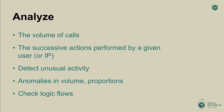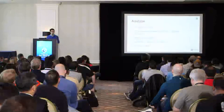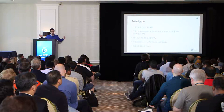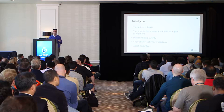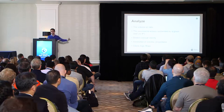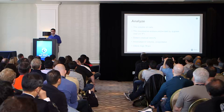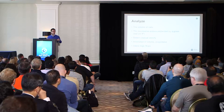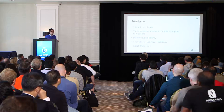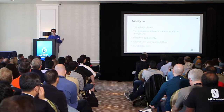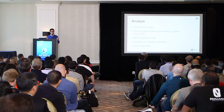Based on this event stream now filled with data, what analysis can we do? We could look at the volume of calls to a given helper, successive actions performed by a given user, IP, browser, or organization. We could detect unusual activity by running machine learning algorithms — forest trees or whatever — on the streaming engine. We can find anomalies in volume, proportions, per IP, per user, per application, per organization, per group. We could also check logic flows: are IPs generally calling these functions in the right order? It all depends on your business logic.